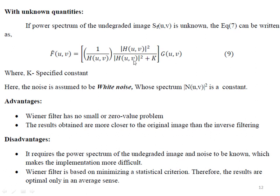What are the advantages of Wiener filtering? In inverse filtering, there is a problem with small or near-zero values in the denominator. In Wiener filtering, there is no such problem — no divide-by-zero issue. The result is a better approximation of the original image compared to inverse filtering.